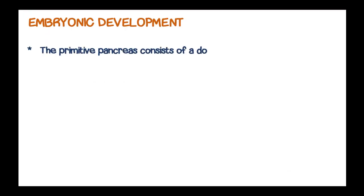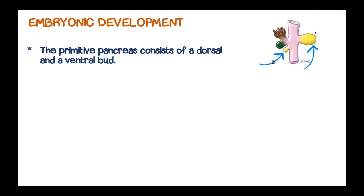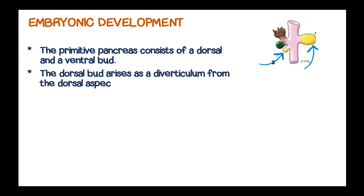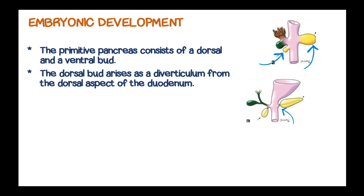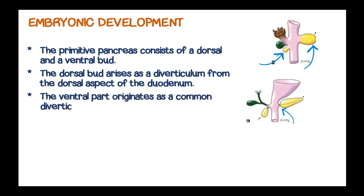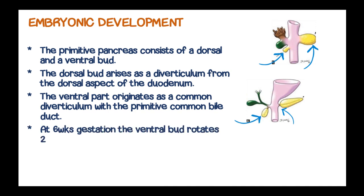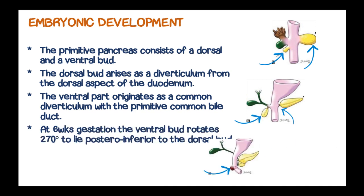The primitive pancreas consists of a dorsal and a ventral bud. The dorsal bud arises as a diverticulum from the dorsal aspect of the duodenum, and the ventral part originates as a common diverticulum with the primitive common bile duct. At 6-week gestation, the ventral bud rotates 270 degrees to lie posterior to the dorsal bud.